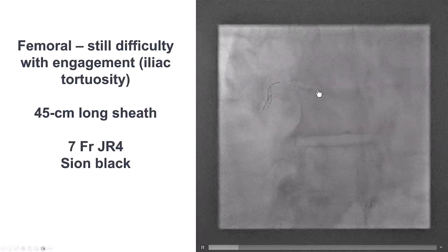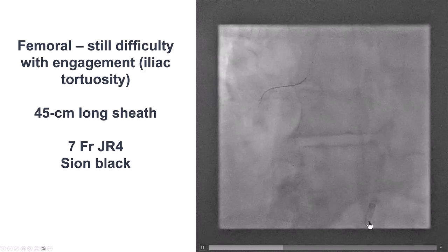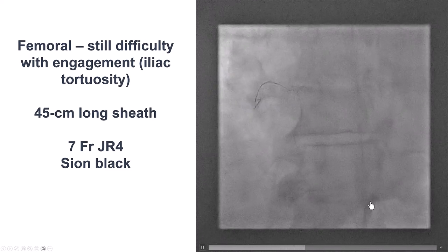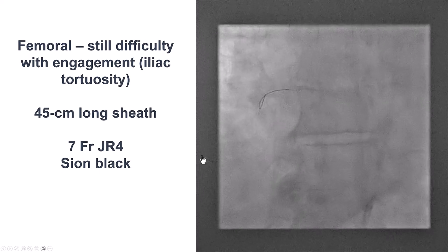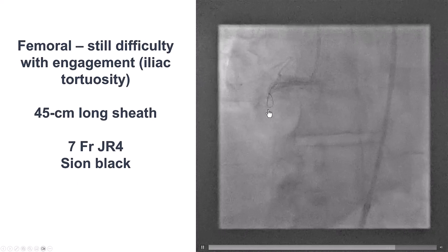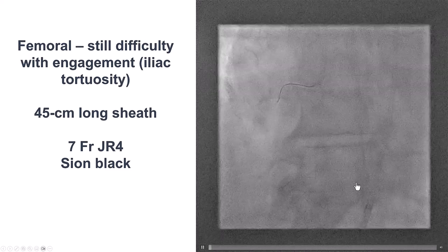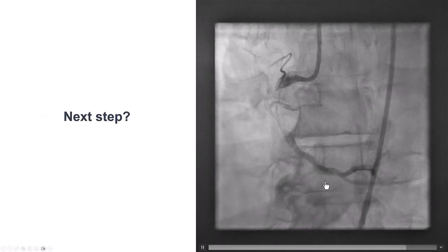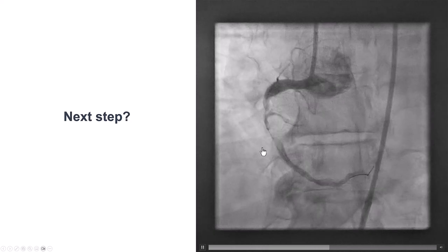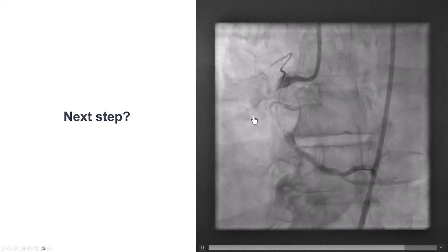We changed to a 7 French JR4 and upgraded the sheath to a 7 French sheath placed 45 centimeters up. After doing that, we had much better support and were able to advance a Sion Black guidewire through the proximal right coronary artery all the way into the distal vessel. Crossing the wire restored some antegrade blood flow, and it was now clear there is a large filling defect, consistent with a large amount of thrombus.